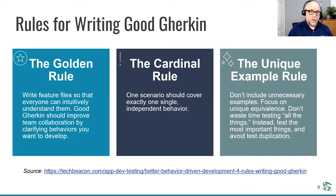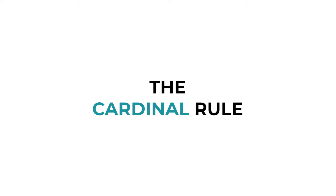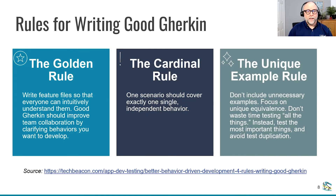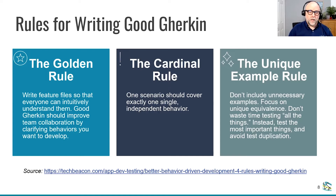and that should lead to scenarios that everyone can understand. The next rule is the cardinal rule — this is really probably the most important rule. At its most basic, it states that one scenario should cover exactly one single independent behavior. We simply don't want to have scenarios that have a whole bunch of behaviors piled into them. While it might seem efficient at some level to have these really long end-to-end scenarios with all those behaviors,